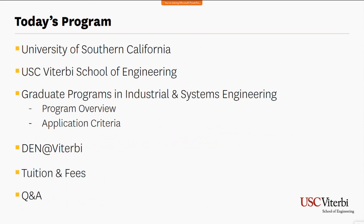For today's program, I'll start out by first talking about the University of Southern California and then specifically the Viterbi School of Engineering. Then we'll jump into the focus of today's presentation, which is our graduate programs in industrial and systems engineering that our faculty members will talk about. I'll then cover application criteria, how to apply, our online delivery method, and there will be an opportunity to ask additional questions at the end.